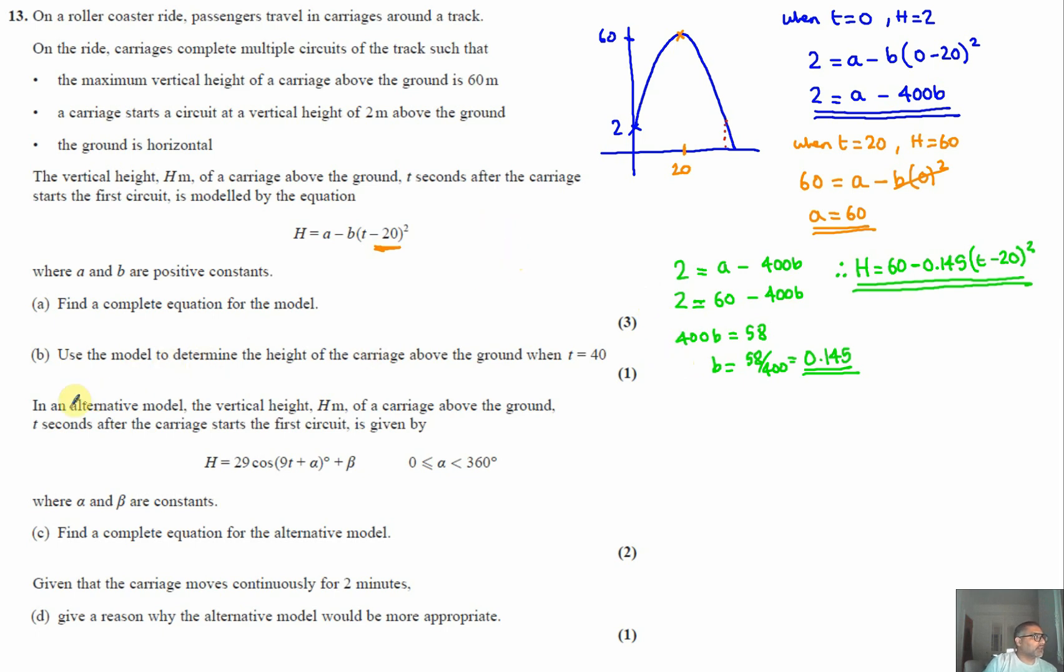Okay, part C uses an alternative model. In this alternative model, the vertical height h at t seconds after it starts is given by this formula, where alpha and beta are constants, and we need to find a complete equation for the alternative model.